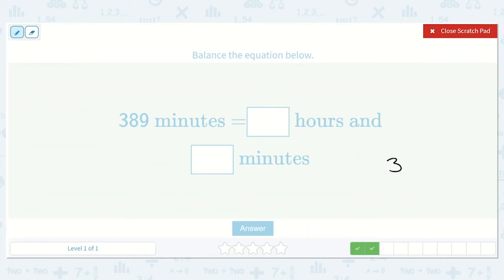So if we have 389 divided by 60, whatever we have left over as our remainder will be how many minutes are left over that wouldn't fit into those hours. So 60 will not fit into 38. So we need to do 60 will go into 389.